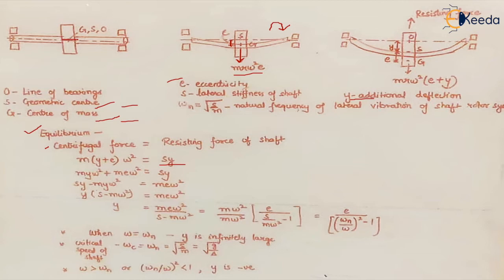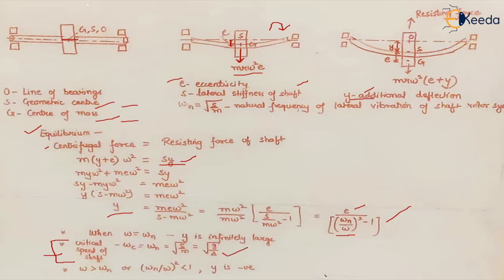The resisting force on the shaft is the stiffness of the shaft multiplied by y, the additional deflection. We found the value of this additional deflection, which is dependent upon eccentricity and the ratio of natural frequency to the system frequency. What we are actually concerned with is the critical speed of the shaft — that is, when omega c, the critical speed, equals the natural frequency of the system. This is the condition we are interested in because at this point the amplitude of vibrations will be very large.